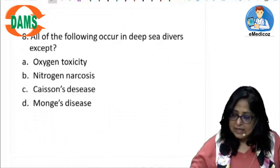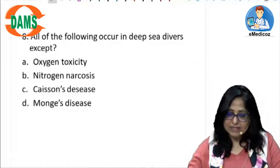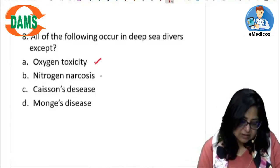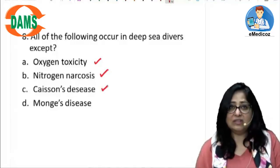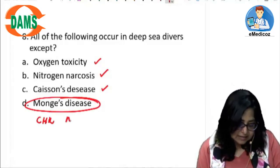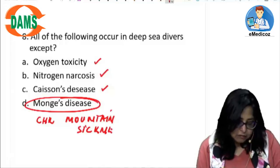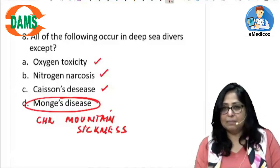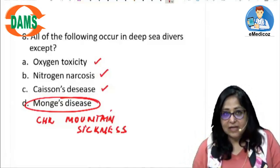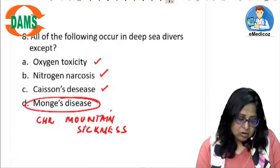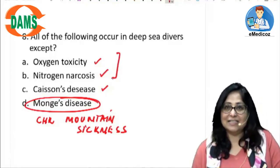The next question: all of the following occur in deep sea divers EXCEPT — oxygen toxicity, nitrogen narcosis, caisson's disease. All three can occur in deep sea divers, but not Monge's disease. Monge's disease is chronic mountain sickness, seen in people staying at high altitude for a prolonged period — about two to three months — and involves pulmonary hypertension and possibly right heart failure.